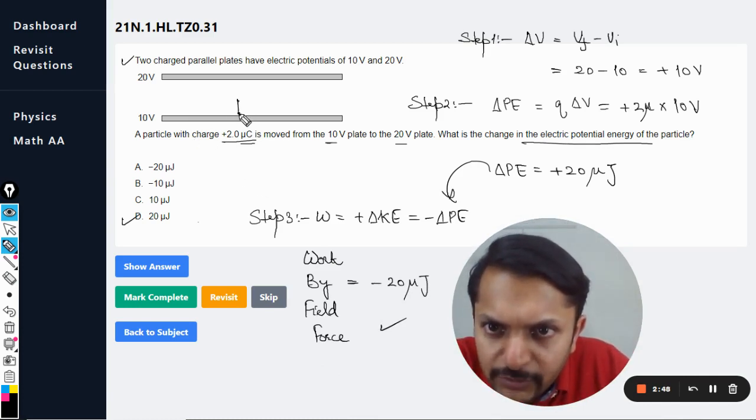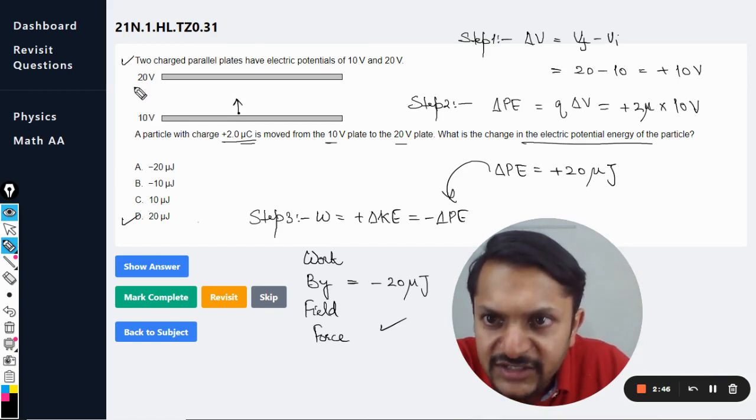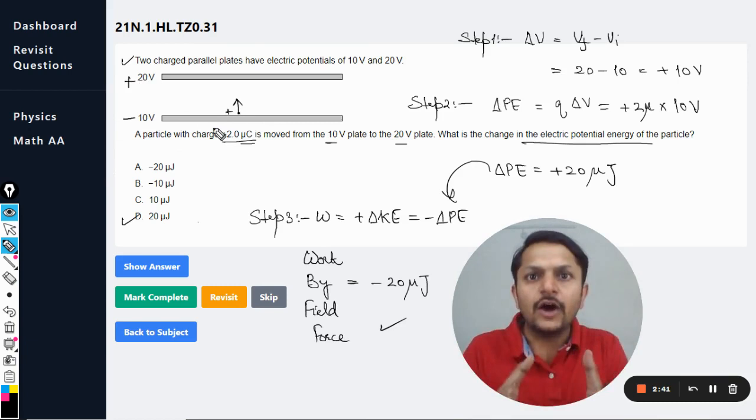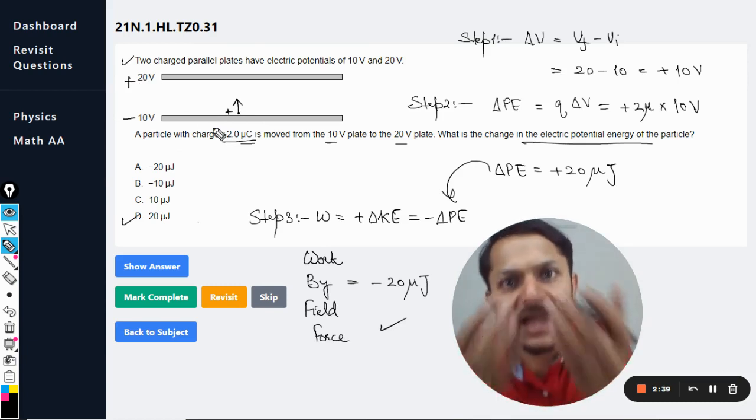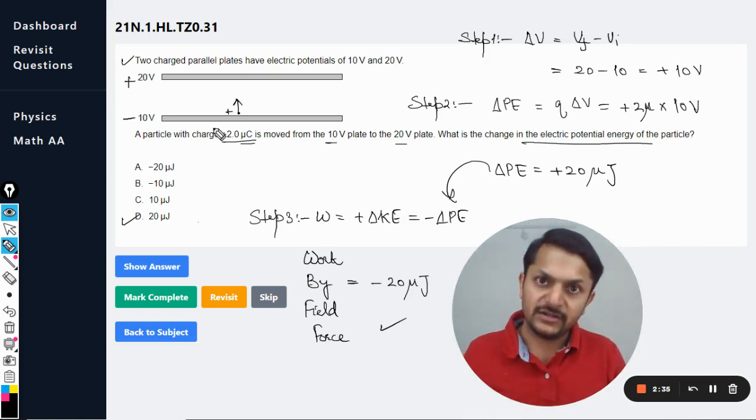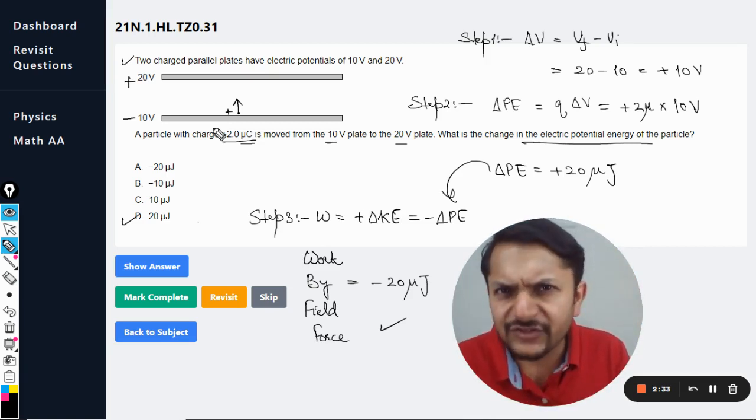Why is it negative work? Let's see. The positive charge is moving from this to this, so this is higher and this is lower. So this is positive, this is negative. So you see a positive charge is now trying to move away from the negative plate and it is trying to move towards the positively charged plate, which is not a spontaneous reaction.